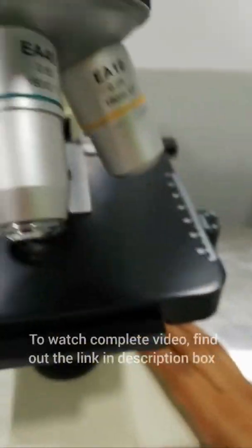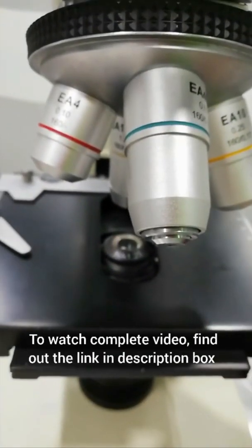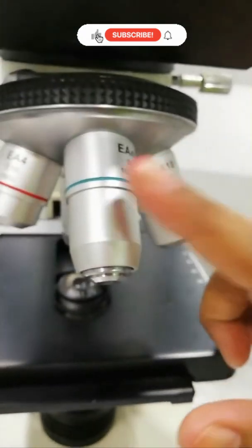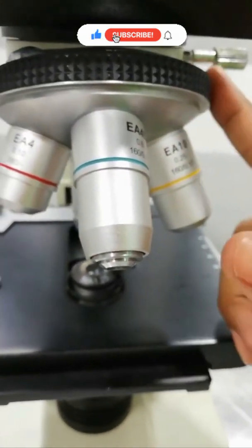This is the revolving nose piece. Each of the lenses you see on the revolving nose piece has a different magnification. This microscope is outfitted with three objectives: a 10x, a 40x, and a 100x. Below the nose piece is the stage.